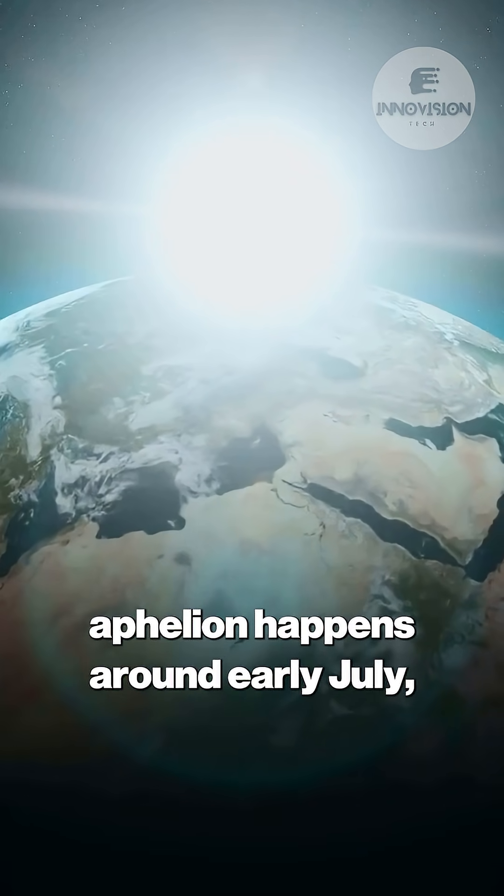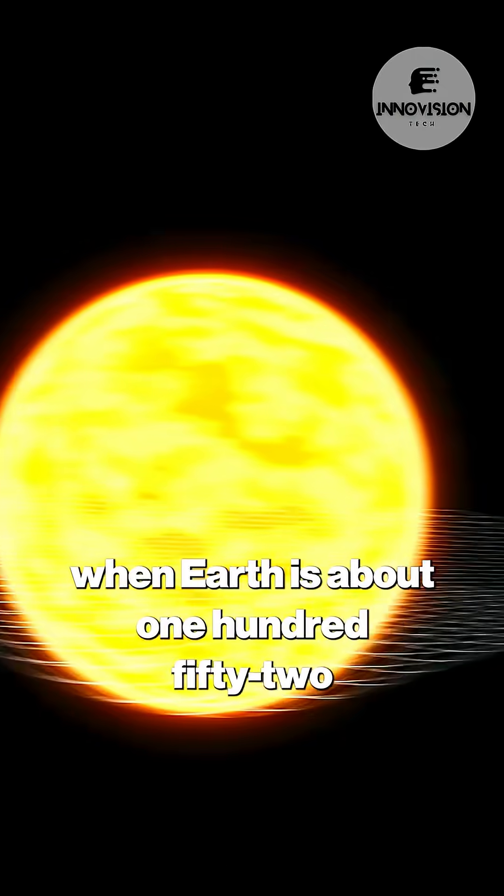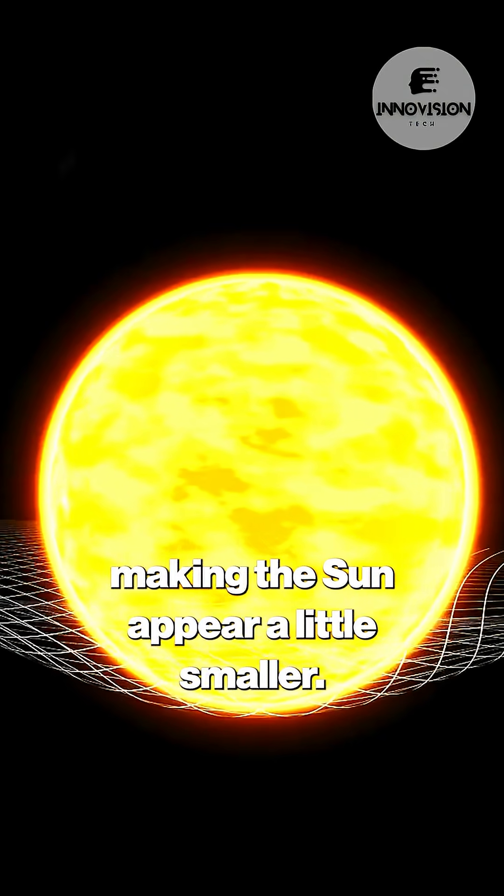Conversely, aphelion happens around early July, when Earth is about 152 million kilometers away, making the sun appear a little smaller.